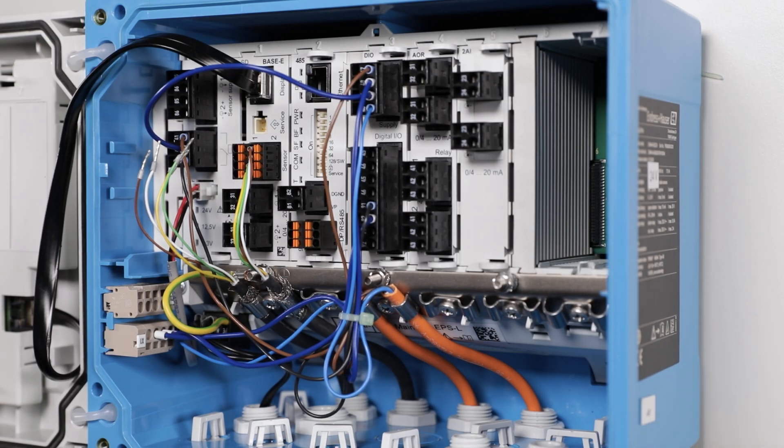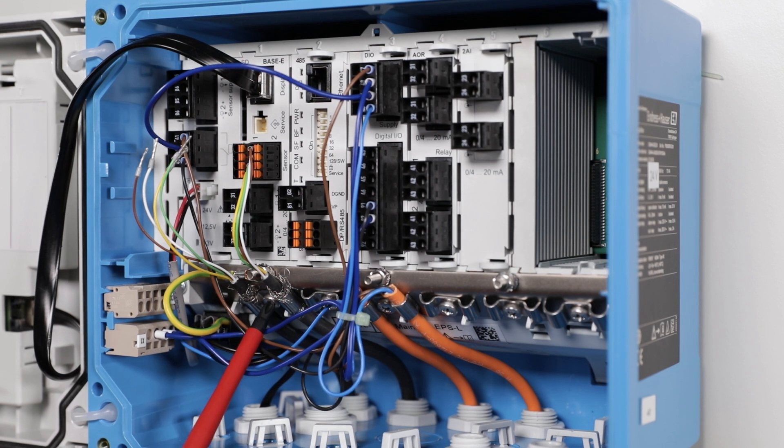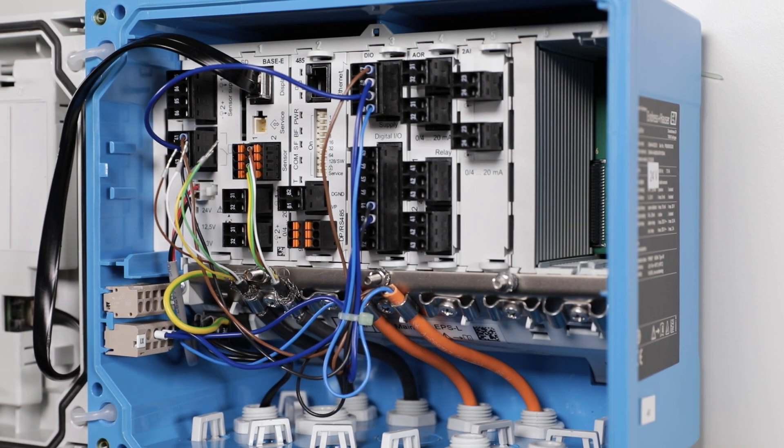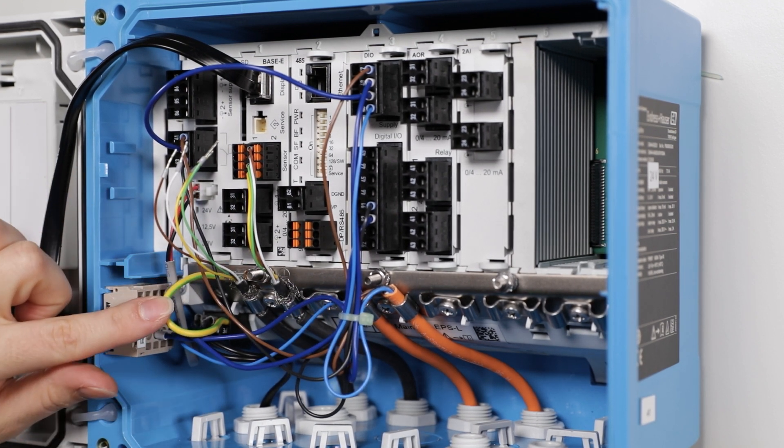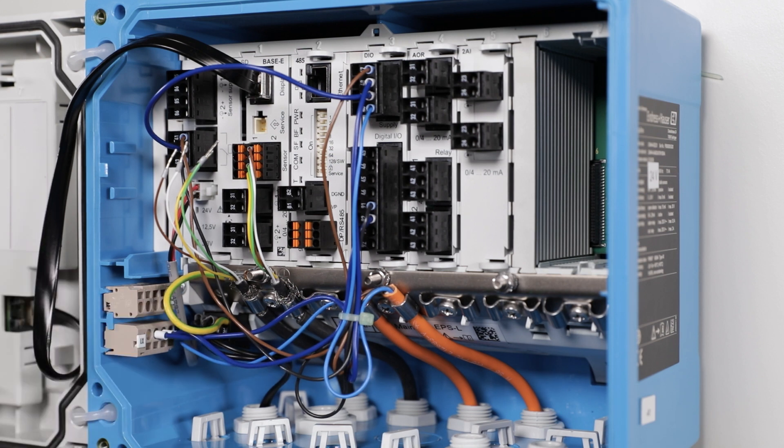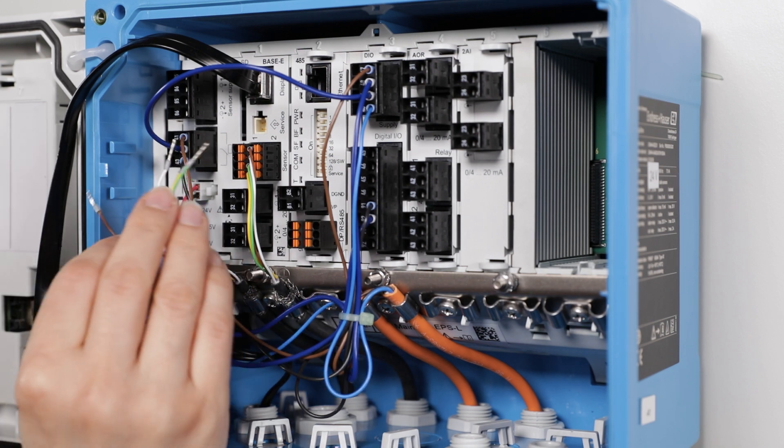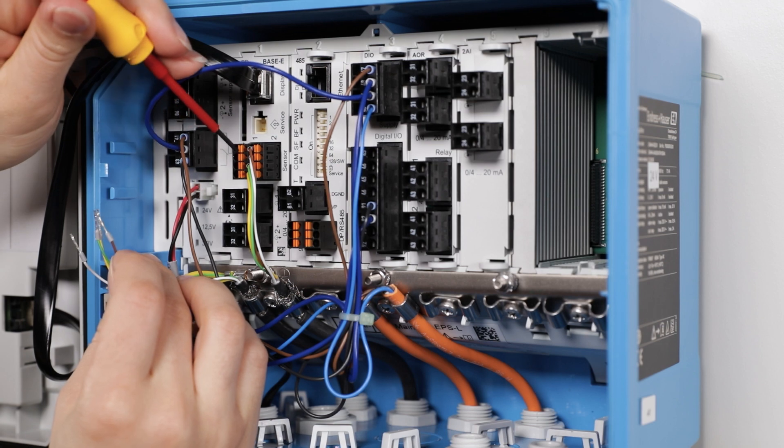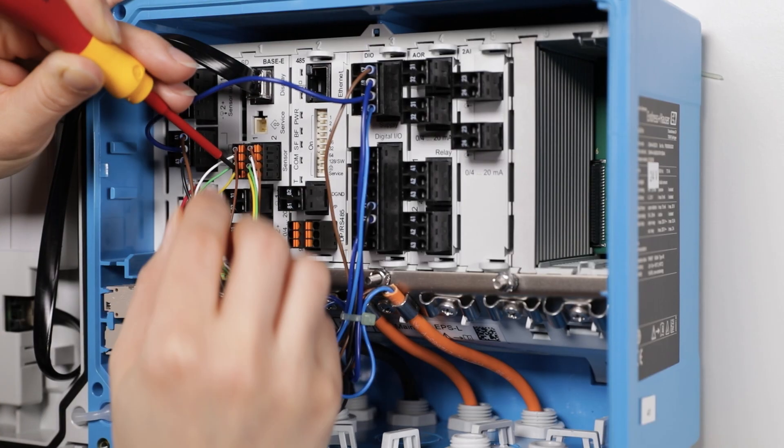Attach the exposed cable shield to the grounding clip by using an appropriate cable clamp. Make sure the cable mounting rail of the CM44 is properly grounded. Thanks to the color-coded wires the connection is very easy.